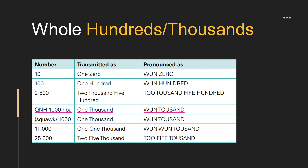Transponder codes, visibility, and runway visual range information which contain whole hundreds and whole thousands shall be transmitted by pronouncing each digit in the number of hundreds or thousands, followed by the word 'hundred' or 'thousand' as appropriate. Combinations of thousands and whole hundreds shall be transmitted by pronouncing each digit in the number of thousands followed by the word 'thousand,' and the number of hundreds followed by the word 'hundred.' Examples: one zero one hundred, two thousand five hundred, QNH one thousand, squawk one thousand, one one thousand, two five thousand.